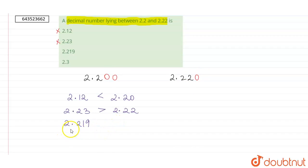Now 2.219 is less than 2.220 and greater than 2.200, so it lies between 2.2 and 2.22.